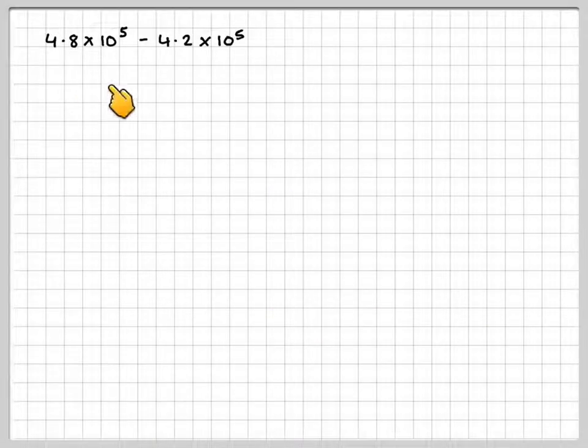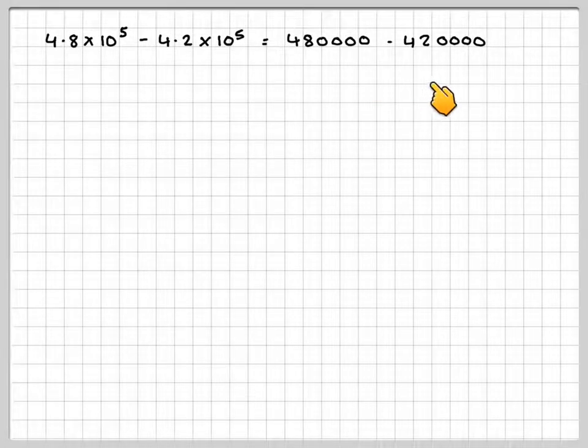4.8 times 10 to the 5 minus 4.2 times 10 to the 5. Well, if you're writing this as an ordinary number, this is 480,000, move the decimal point 5 places this way, minus 420,000, move the decimal point 5 places this way.